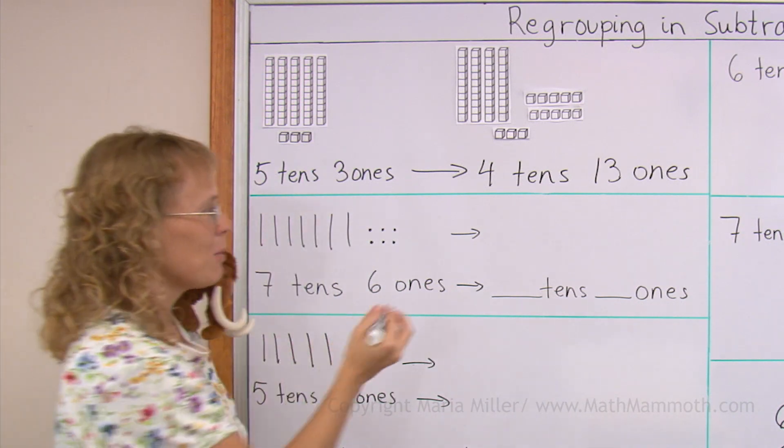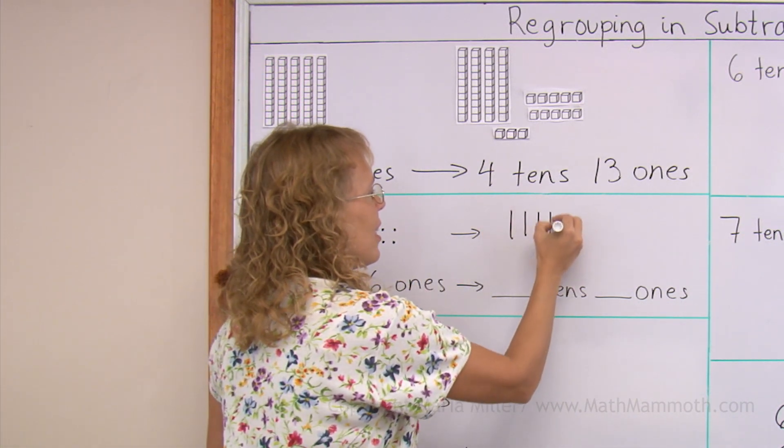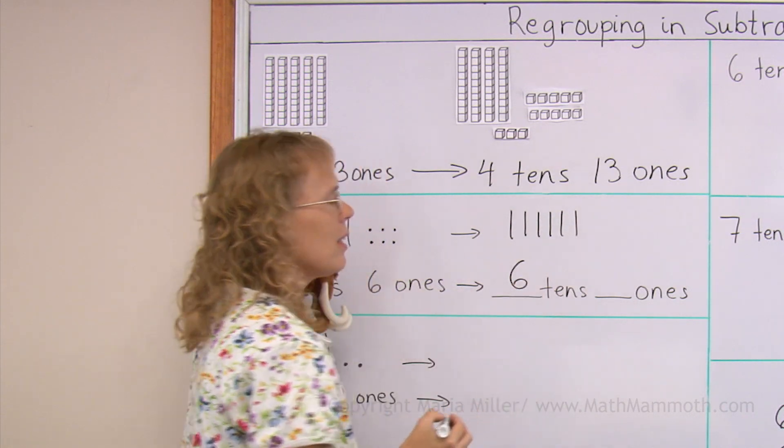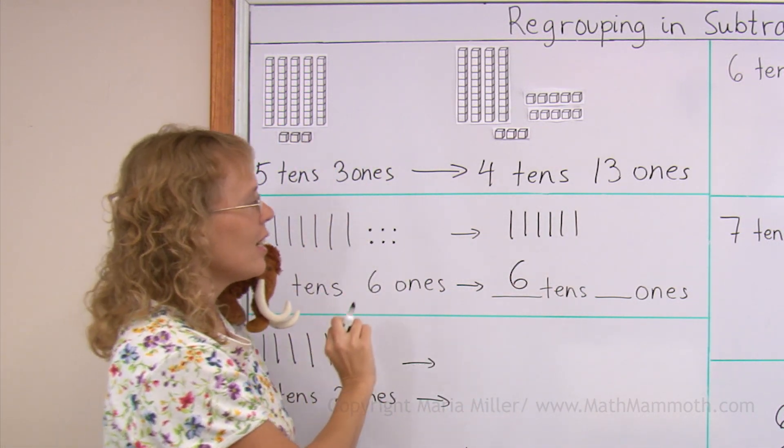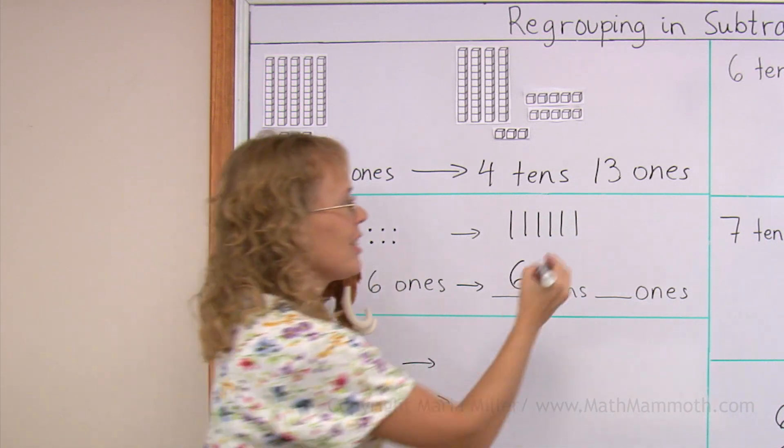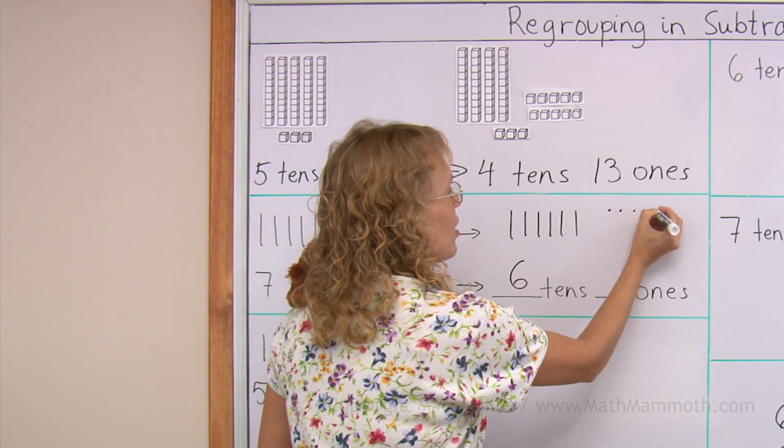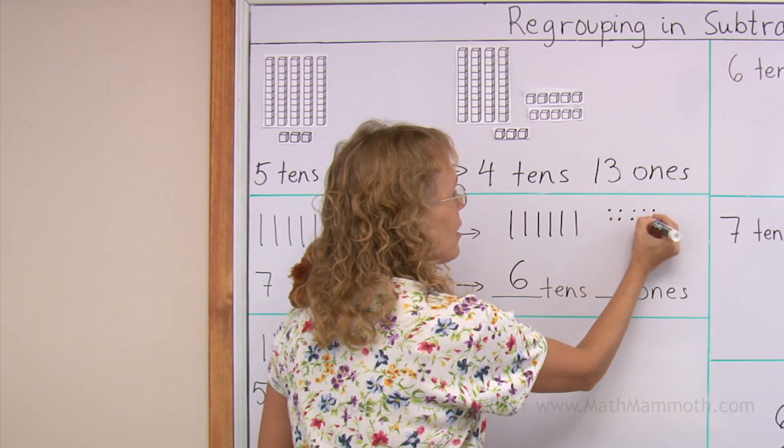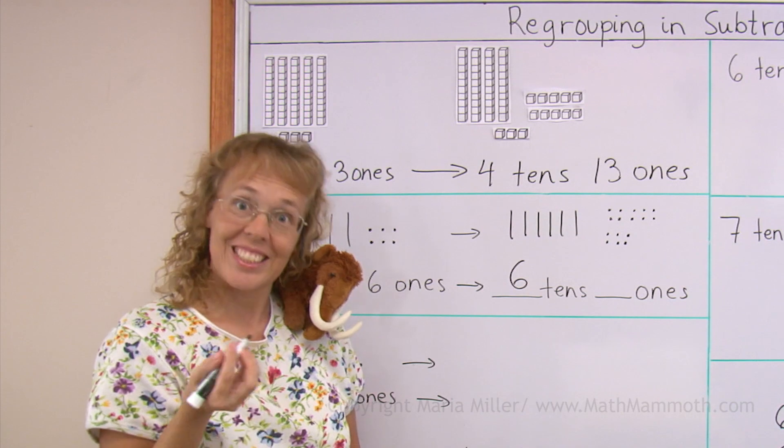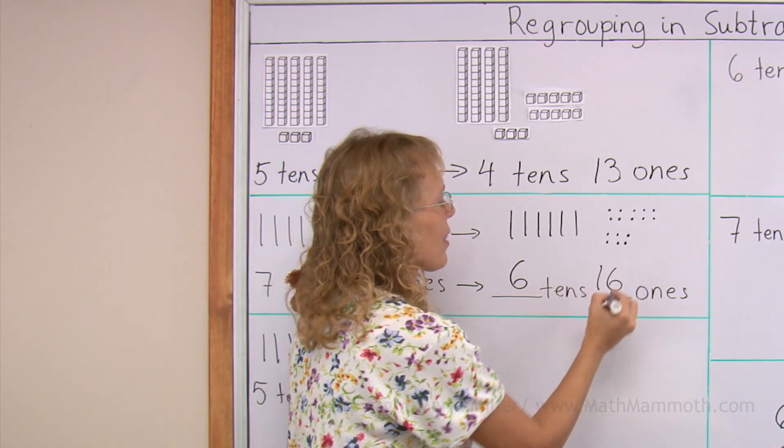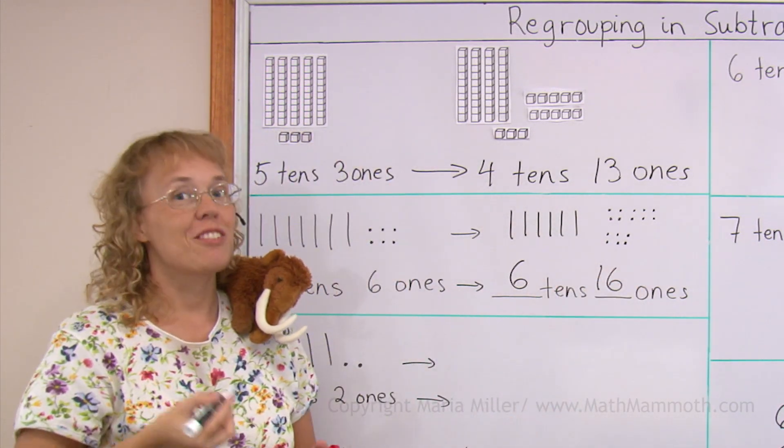Instead of seven tens, we will have six tens, right? And then what? Instead of six little ones, you know the one ten gets broken down. So it becomes ten ones. And then I still have the six too. So in total, sixteen, right? This is the process of regrouping.